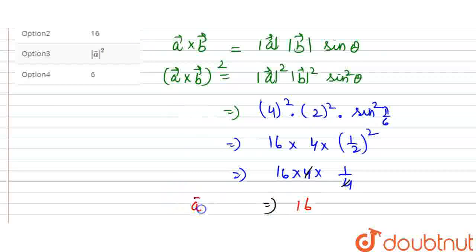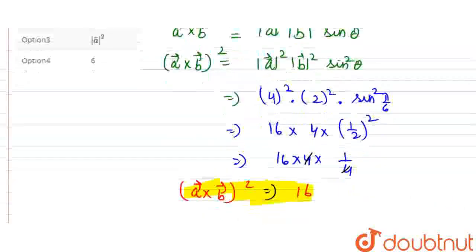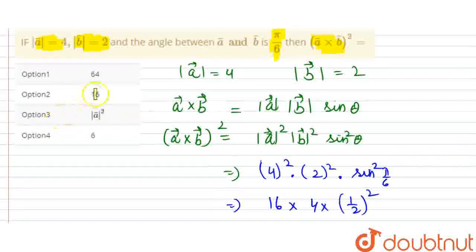So, (a⃗ × b⃗)² is equal to 16. What will we get here? We will get 16. It will be option B.